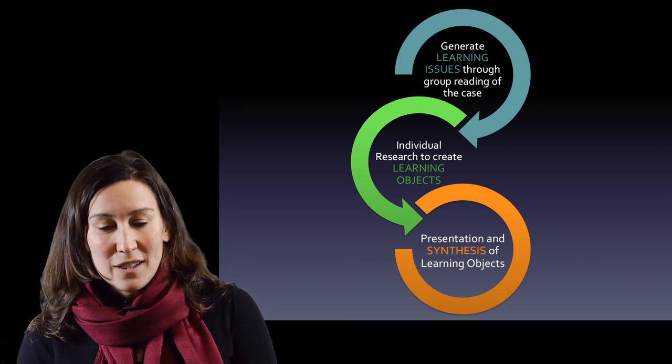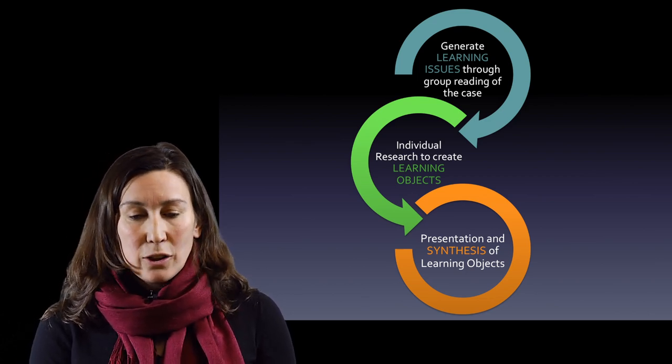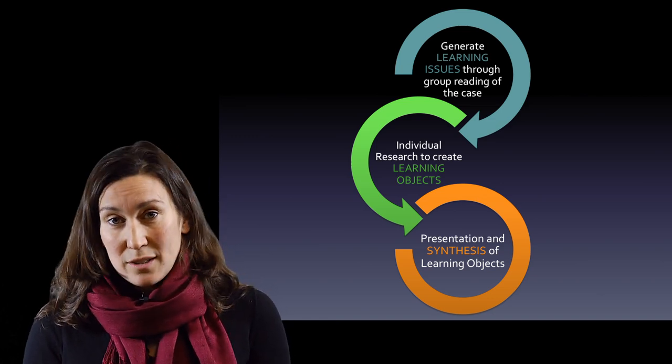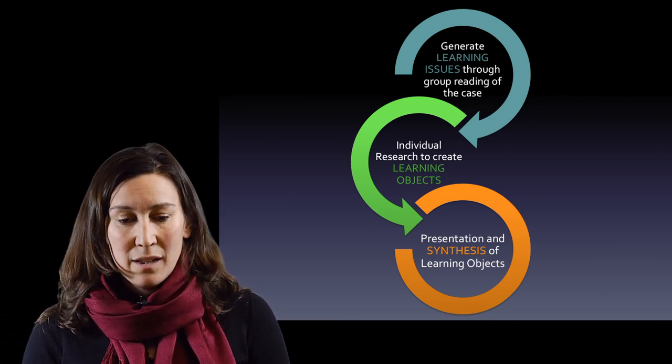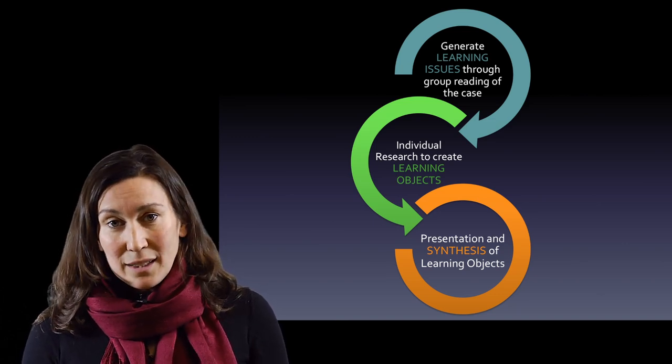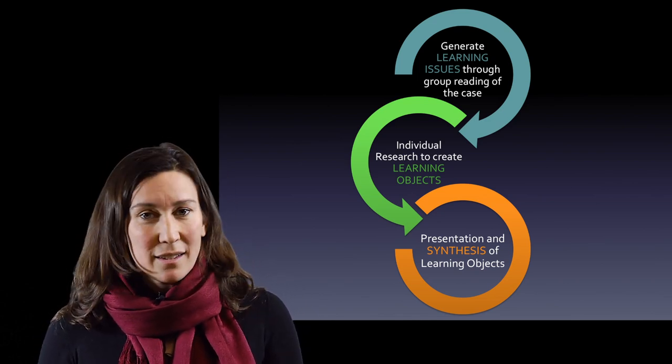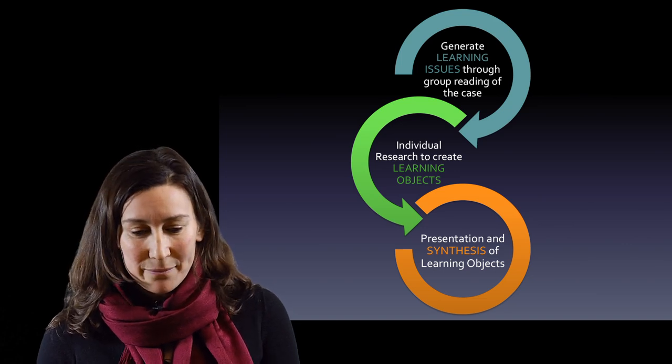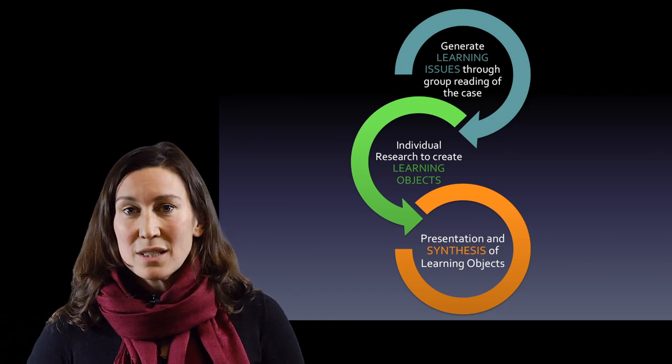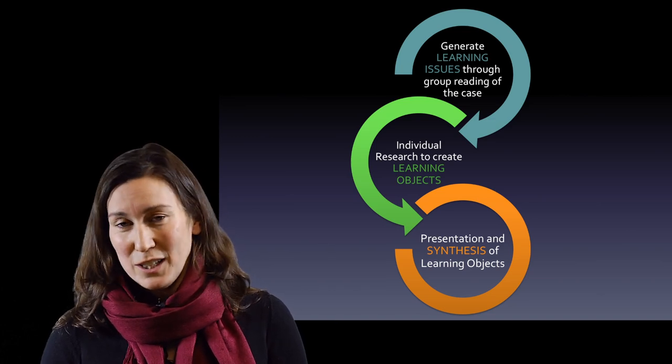So let's look at that a little more closely. There are three main processes that happen in a case. The first is that you generate learning issues through reading through the case as a team. Now learning issues are essentially questions but they're really refined questions and I'll give you an example in a minute. So the first process is generating these learning issues. The second is that you independently research the learning issue that you've been assigned to create a learning object and the learning object is just essentially the answer to that question. Finally you come back together as a group and you present your learning objects to each other. You discuss them you synthesize them and then as a group based on that new knowledge you come up with three potential interventions for trafficking.